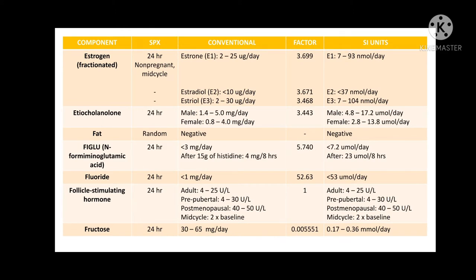For fractionated estrogen, we have E1, E2, and E3. E1 is estrone, E2 is estradiol, and E3 is estriol. They have different conversion factors: estrone uses 3.699, estradiol uses 3.671, and estriol uses 3.468.